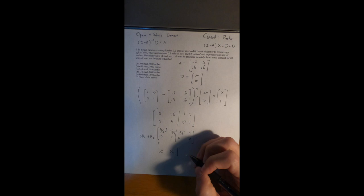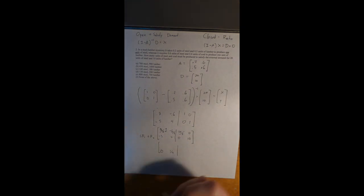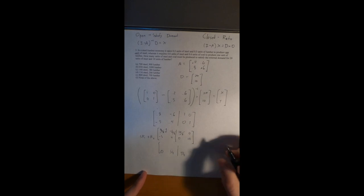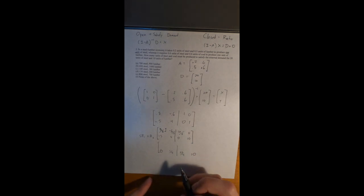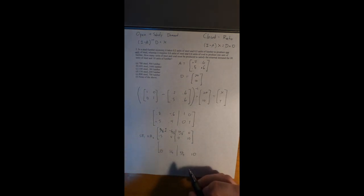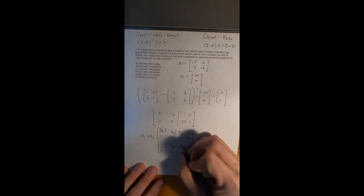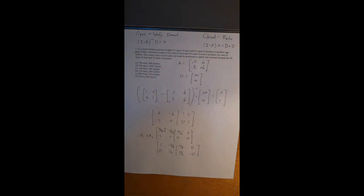Our matrix now looks like [[1, −6/8 | 10/8, 0], [0, 1/4 | 25/4, 10]]. We'll move on to the next step and copy that down.